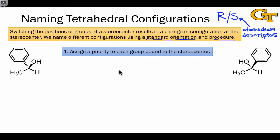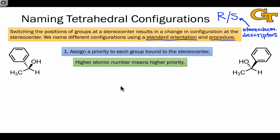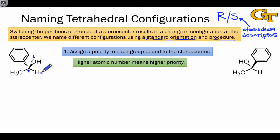The first step of this process involves assigning a priority to each group bound to the stereocenter, and we use some rules to determine what has highest and lowest priority. The first is that higher atomic number means higher priority, and in many cases you can use this rule alone. For example, here we see a hydrogen, an oxygen, and two carbons bound to this central stereocenter. Clearly, oxygen, which has the highest atomic number, will be associated with the highest priority, labeled number one. Hydrogen has the smallest atomic number and so it's position four.